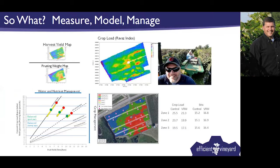As Kevin mentioned, yield mapping has been a key component when we try to do variable rate crop load management in our concord vineyard. We've done work on variable rate lime and fertilizer application, variable rate shoot thinning, and variable rate fruit thinning. We're trying to model crop loads and the yield-to-pruning-weight ratio, find where the balance numbers are for a particular variety, region, and market, and hit those crop load targets through fruit thinning. Having an accurate yield map really helps us come up with crop load maps and predict fruit quality from different regions of the vineyard.